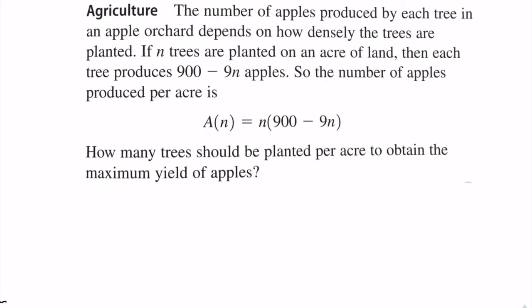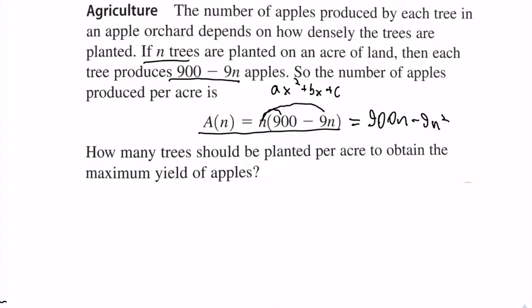Agricultural calculations are a rather unexpected application of quadratic functions. This question states that the number of apples produced by each tree in an apple orchard depends on how densely the trees are planted. If n trees are planted on an acre of land, each tree produces 900 − 9n apples. The number of apples produced per acre is n(900 − 9n). Expanding gives 900n − 9n², which we rewrite as −9n² + 900n. So a = −9, b = 900, and there is no c.